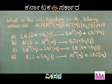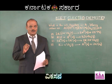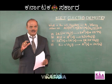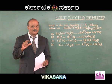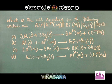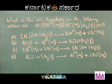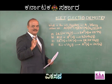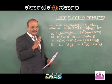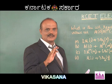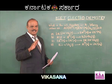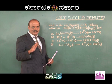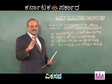This is an important question. What is the cell reaction for the following voltaic cell? They have given a voltaic cell. The aluminum electrode is the anode because it is given on the left side. The bromine electrode is the cathode because it is given on the right side. The left side electrode is always the anode; the right side electrode is always the cathode.